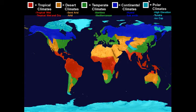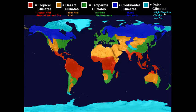Polar climates exist at high elevation. Look at the Himalayan mountains — the tallest mountains in the world — they have polar climates even though they're near the equator. High elevation climates can be extremely cold because temperatures decrease as you go up in the troposphere. We have tundra and ice cap climates, like Antarctica.